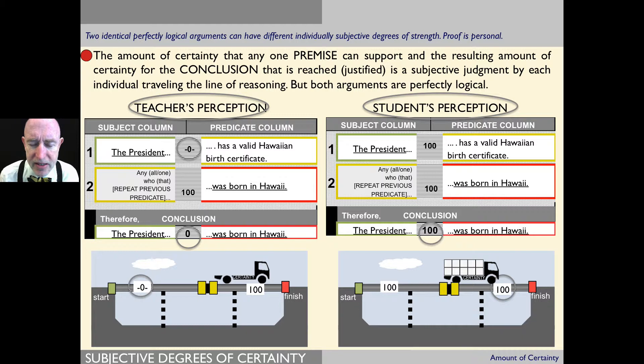You can have—they can each be looking at an identical argument and arrive at a different degree of certainty. So the amount of certainty that any one premise can support, and the resulting amount of certainty for the conclusion that is reached, justified, is a subjective judgment by each individual traveling the line of reasoning.